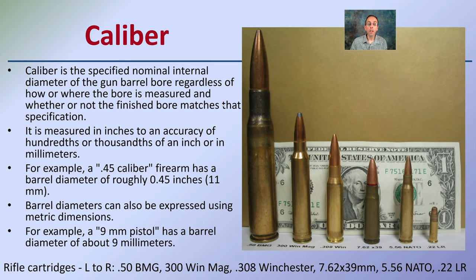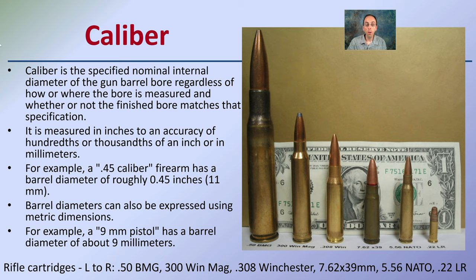Then we have different calibers. Caliber refers to the specific nominal internal diameter of the gun barrel — the diameter of the barrel is a way to think about caliber. We have the .22 caliber all the way up to the .50 caliber shown here. When we say .22 caliber, the firearm has a barrel diameter of roughly 0.22 inches of the bore — a much smaller diameter than the .50 cal. Caliber can be measured in inches or in millimeters; a very common one is the 9-millimeter pistol, which has a barrel of 9 millimeters.